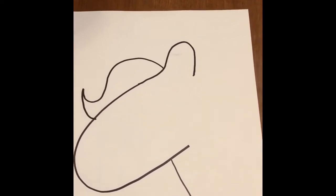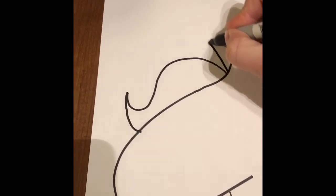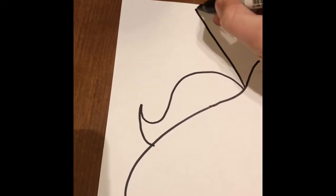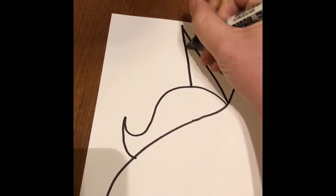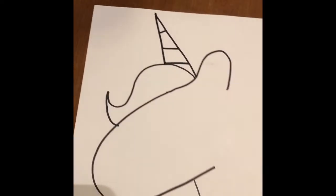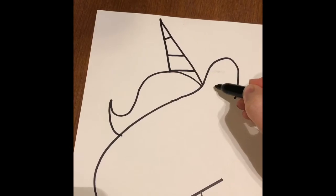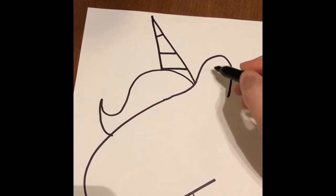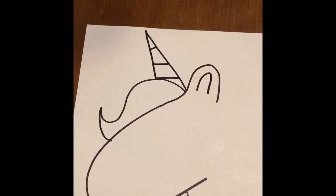Next I'm gonna draw the horn. So I'm gonna start in the same place. I'm gonna come straight up to a point and then I'm gonna come down. There is my horn and I'm gonna add some little lines for my horn. Then I'm gonna add another shape just like this shape but smaller inside my ear.